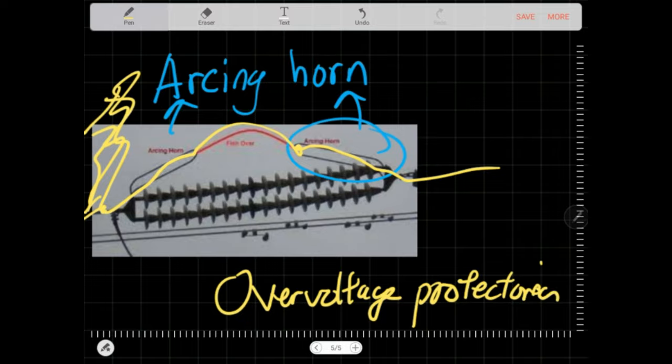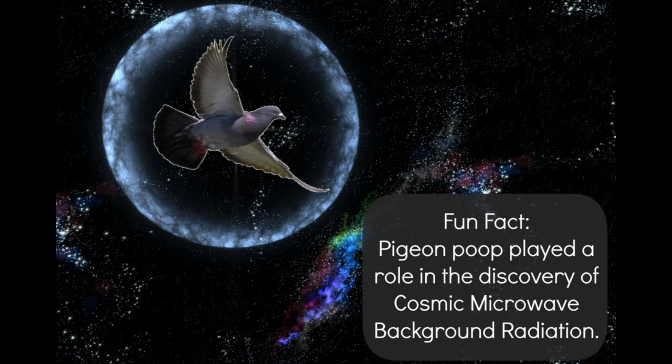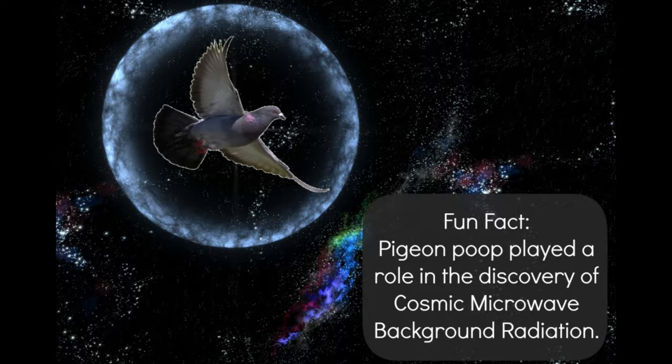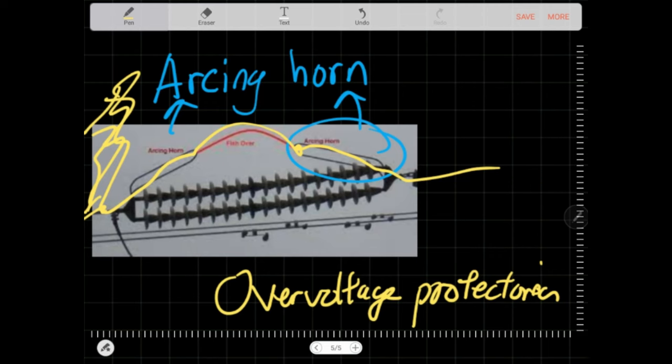Sometimes birds like to sit on it and then they poop on the arcing horn and that allows some path for conductivity. Yeah, those kind of stuff.